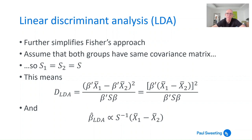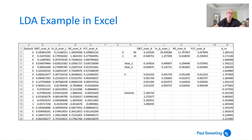A slight simplification of Fisher's Linear Discriminant is Linear Discriminant Analysis (LDA). The only simplification is assuming both groups have the same covariance matrix, so S1 equals S2 equals S. Instead of calculating separate covariance matrices for each group, you just calculate the covariance across all firms. This slightly simplifies the equation: instead of S1 + S2 in the denominator, you have a single covariance matrix, and the estimator beta-hat LDA is proportional to the inverse of this covariance matrix multiplied by x-bar-one minus x-bar-two.